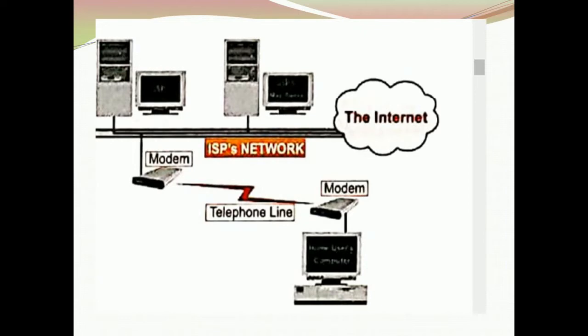The computer at the bottom of the diagram is the client machine which will be used by users like us. The two computers at the top of the diagram are the servers which will provide internet service to the client machine. Both are connected through telephone lines. If the client machine wants to make any request to the server, the client machine will produce digital signals.